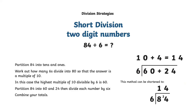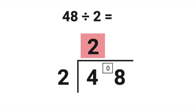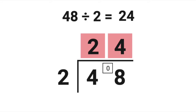Short division is used to divide multi-digit numbers by a one-digit number. For example, 48 divided by 2. How many 2's are there in 4? 2. How many are left over? 0. How many 2's are there in 8? 4. Great job! 48 divided by 2 equals 24.